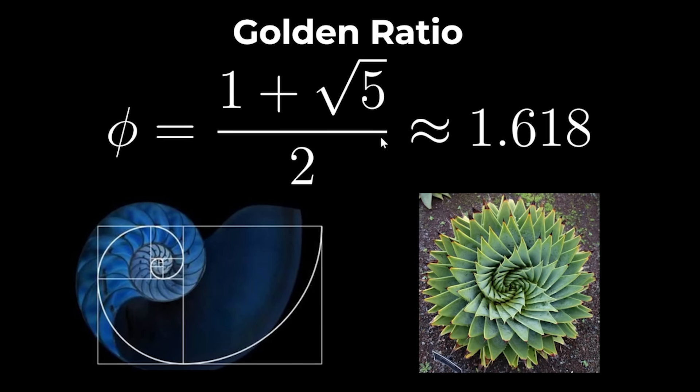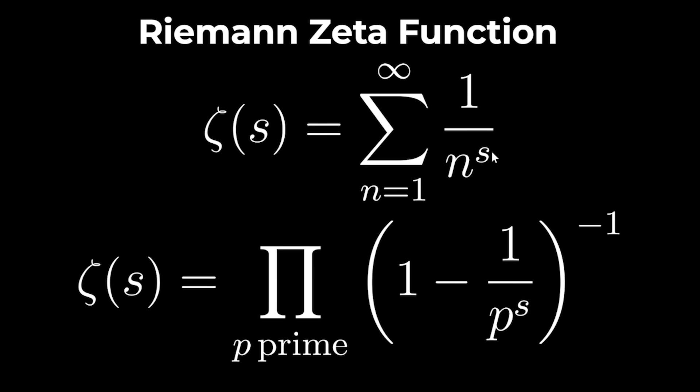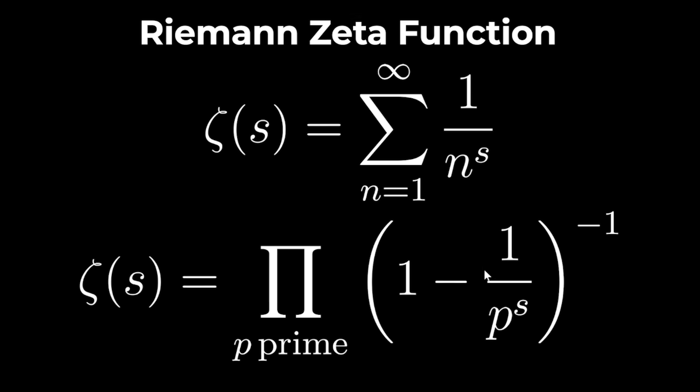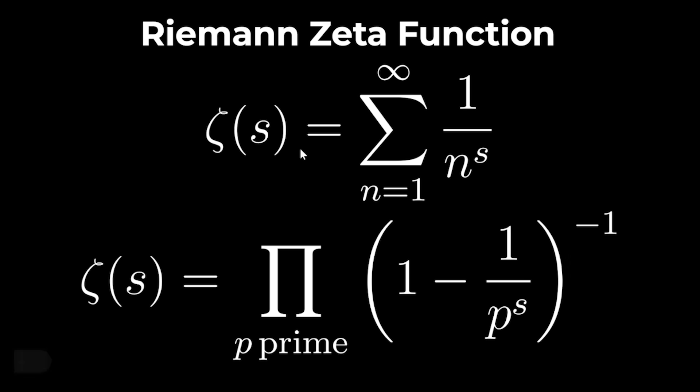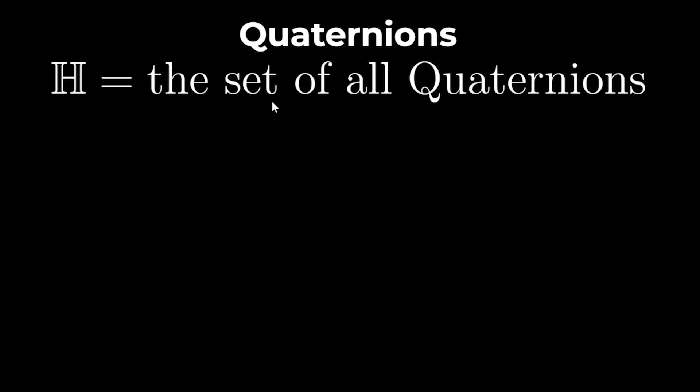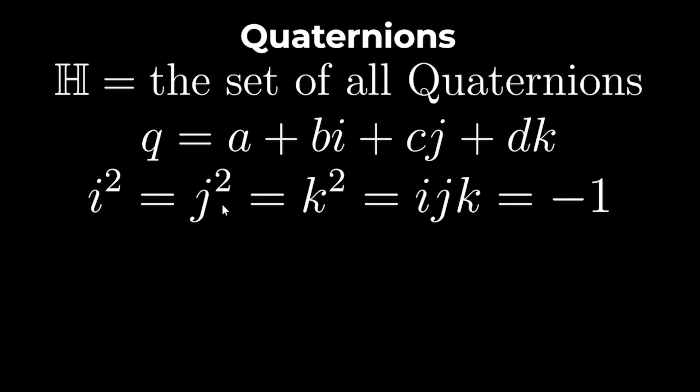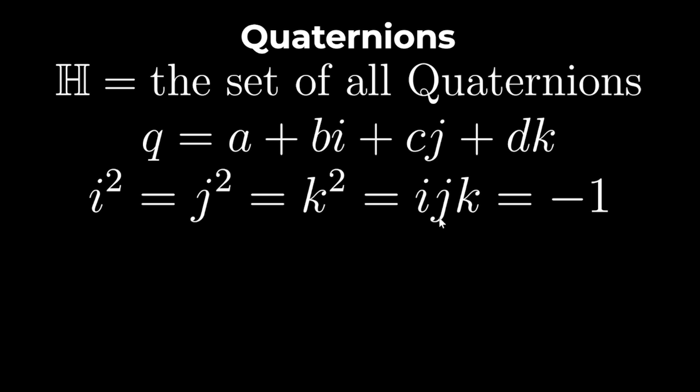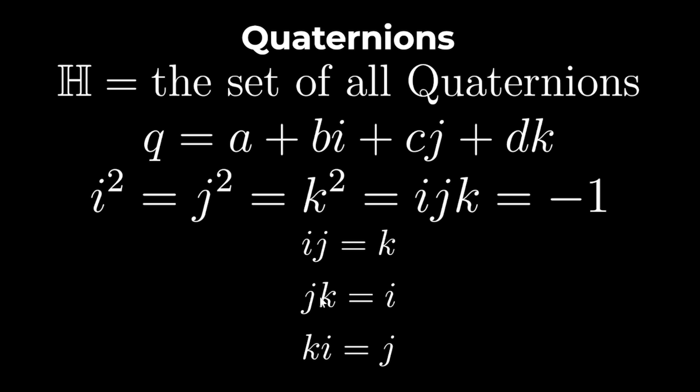The golden ratio is 1 plus root 5 over 2 or 1.618. The Riemann Zeta function equals the sum from 1 to infinity of 1 over n to the s. And it's also the product of 1 minus 1 over p to the s inverted for all prime numbers. So this is useful when working with prime numbers. Bold h is the set of all quaternions and a quaternion is a number q which equals a plus bi plus cj plus dk where i squared equals j squared equals k squared equals ijk equals minus 1. So ij equals k jk equals i and ki equals j. Got it?